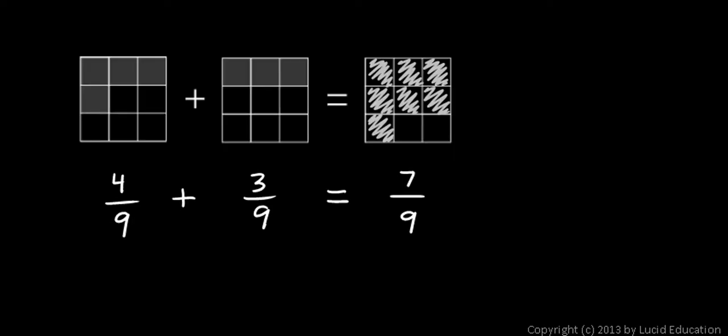Here, these fractions represent the same type of thing. This is four what? Four-ninths. And three what? Three-ninths. So when we add them together, we get seven. Seven what? Seven-ninths. Seven of that type of thing. They're like fractions.